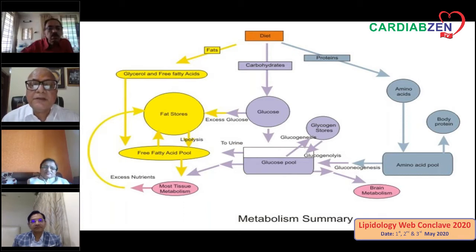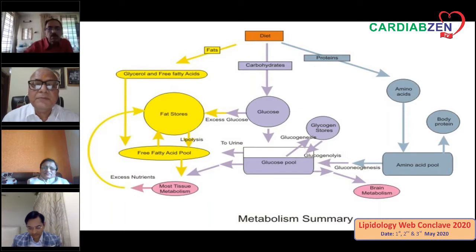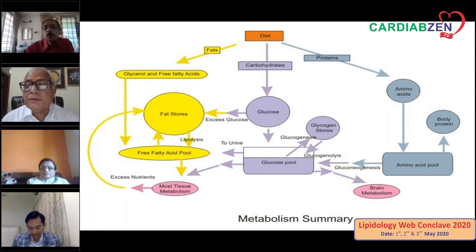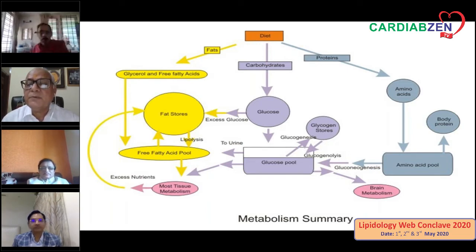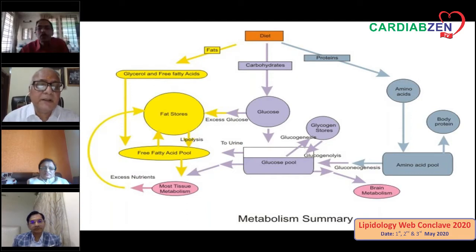As glycogen would be depleted back to glucose, if there was more sugar or carbohydrate, it would be stored as glycogen. The next step was the amino acid pool, because protein is required for cell synthesis and hormones. If you have excess protein, it is stored in the form of amino acids and body protein. Lipid came as a store of fat because it is readily available for energy.